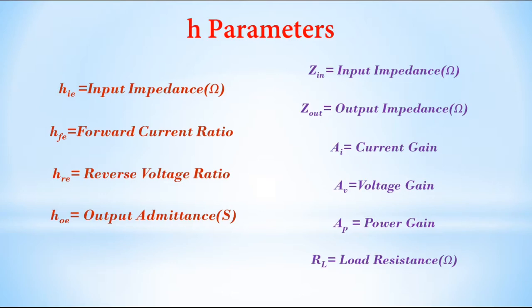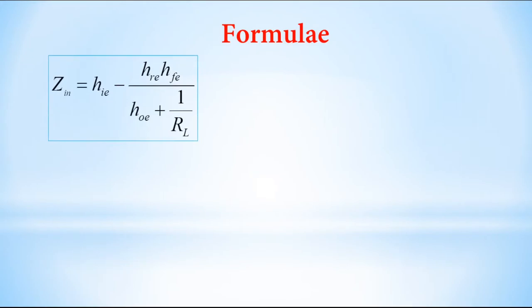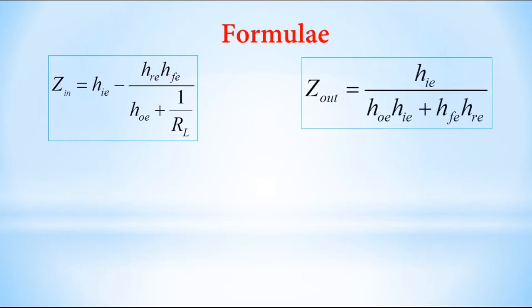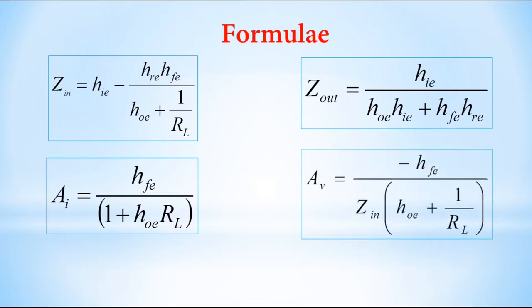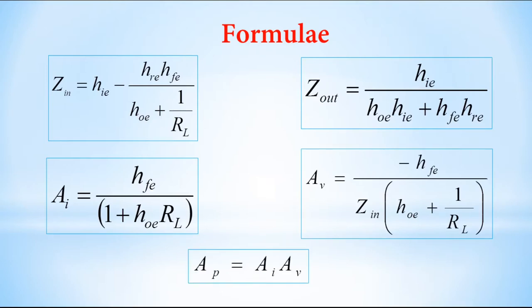Now let us look at the formulas. Input impedance Zin is equal to HIE minus (HRE × HFE) divided by (HOE + 1/RL). Output impedance Zout equals HIE divided by (HOE × HIE + HFE × HRE). Current gain AI equals HFE divided by (1 + HOE × RL). Voltage gain AV equals minus HFE divided by (Zin × (HOE + 1/RL)). The minus sign represents a phase difference of 180° between output and input voltage. Power gain AP equals AI × AV.